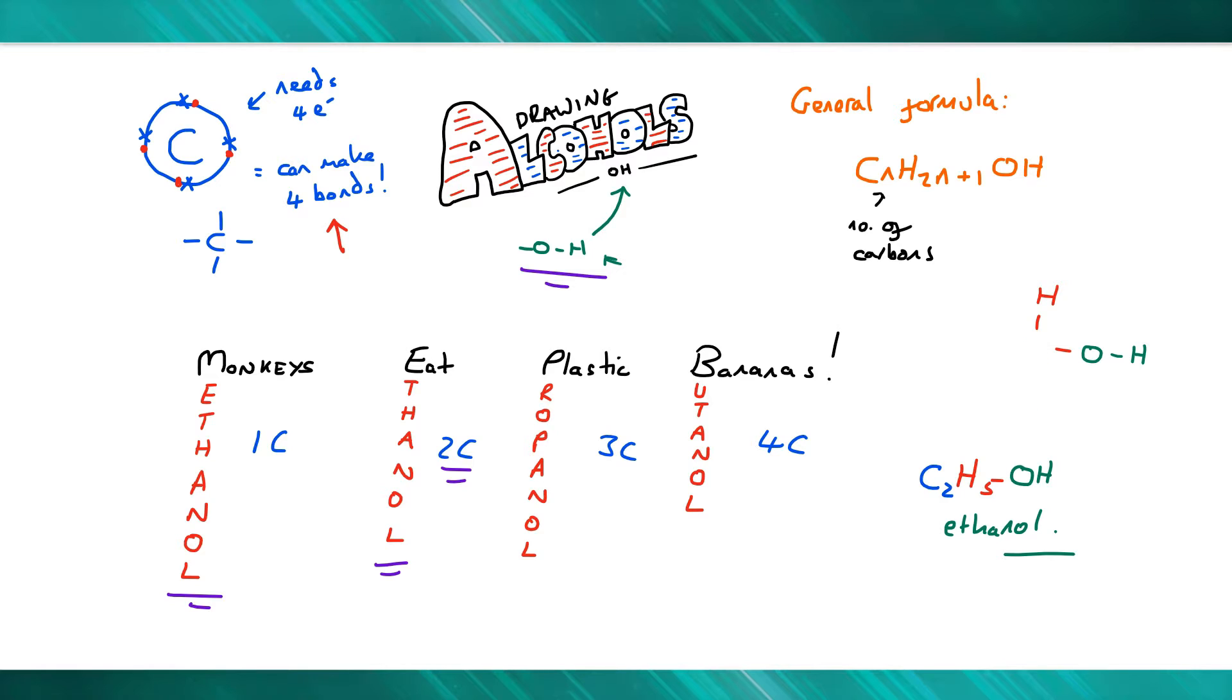If we try to work out the formula for propanol, which has three carbons, we start by putting C3. To work out the hydrogens, it's 2n+1. Our n is 3, so 2 times 3 plus 1, which is 6 plus 1, equals 7. So I have C3H7, and then I add OH on the end. That's the formula for propanol.